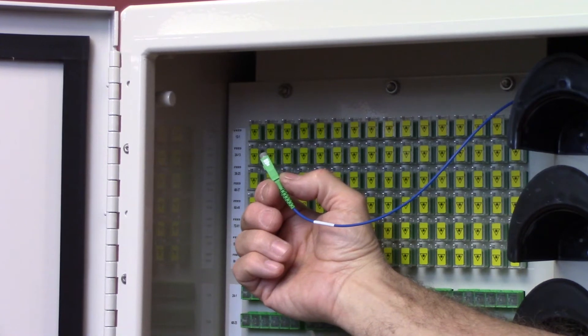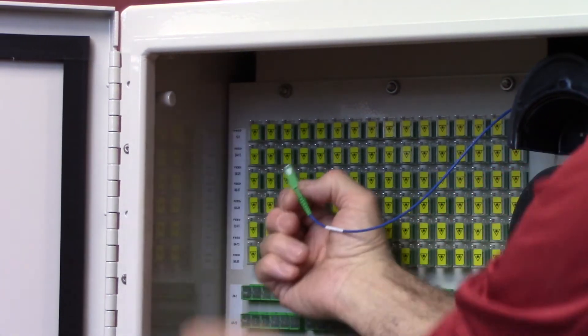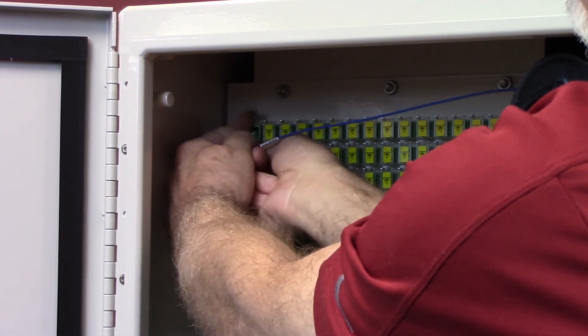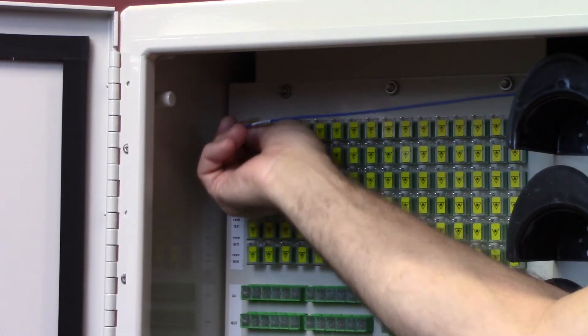Remove the dust cap from the splitter connector and lift the adapter shutter. Insert the splitter connector into the adapter. All feed adapters have a yellow protective shutter.